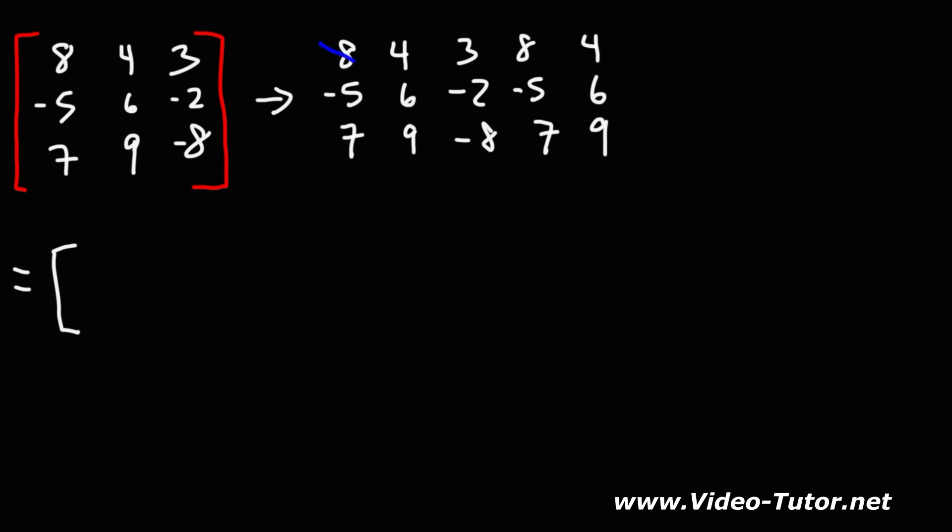So, let's multiply these three numbers starting from the top left. 8 times 6 times negative 8. Let's use a calculator for that. 8 times 6 is 48 times negative 8, that's negative 384. Next, we have 4 times negative 2 times 7, that's negative 8 times 7, which is negative 56.